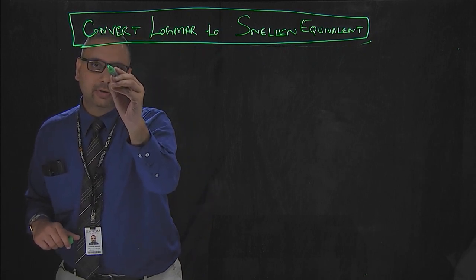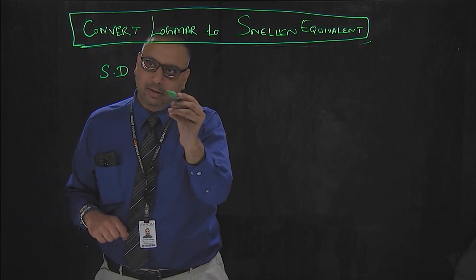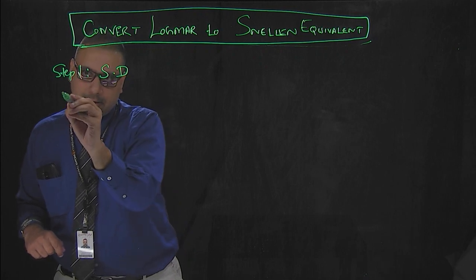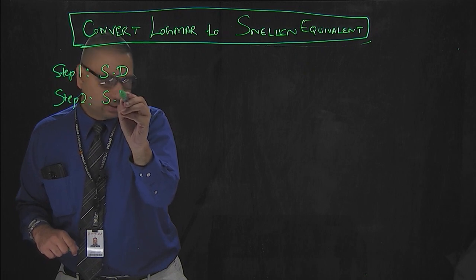The formula for that is Snellen denominator can be calculated first. Step one would be to calculate Snellen denominator and step two would be to calculate Snellen equivalent.